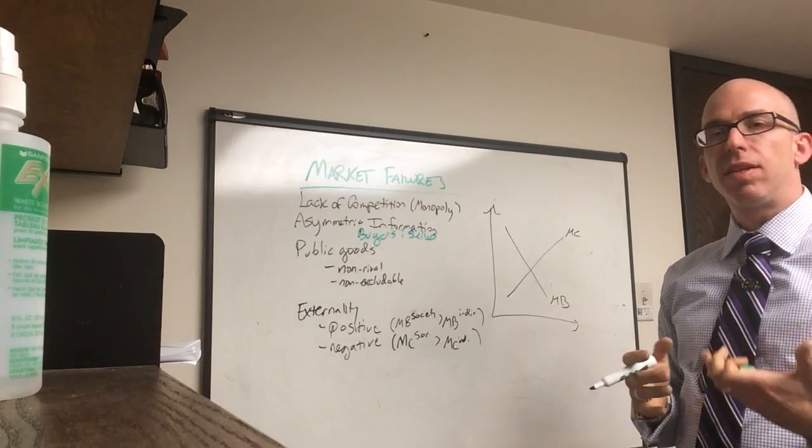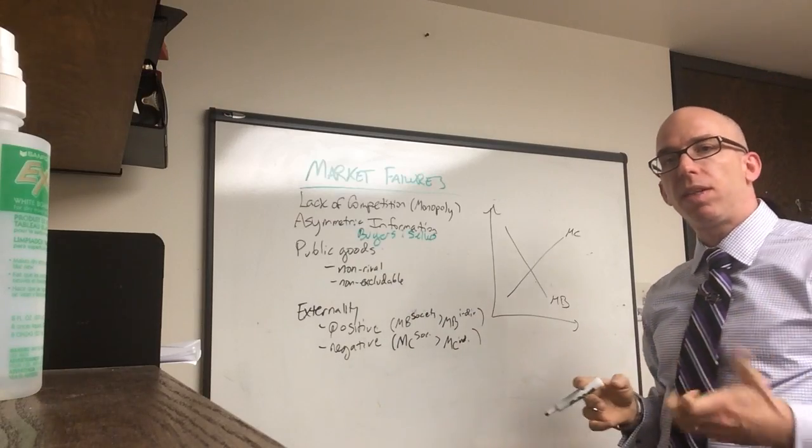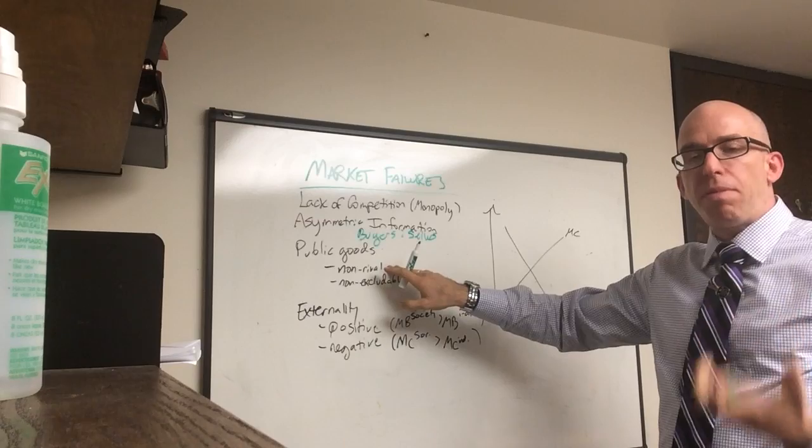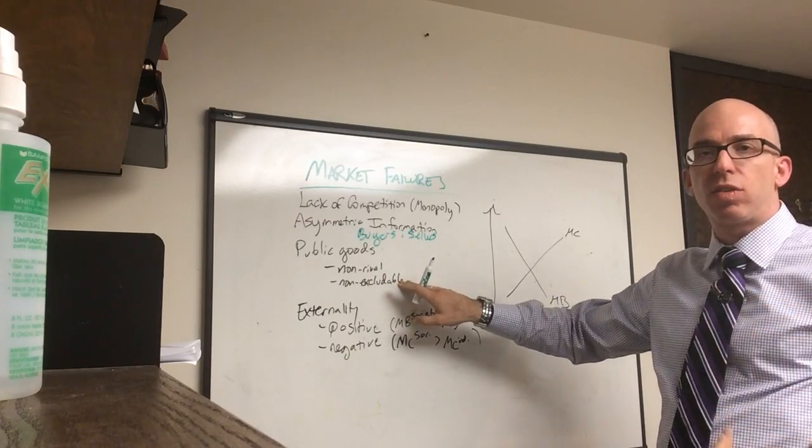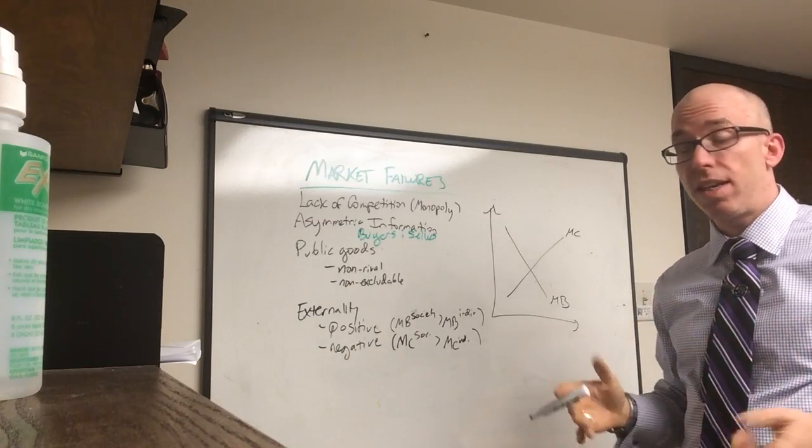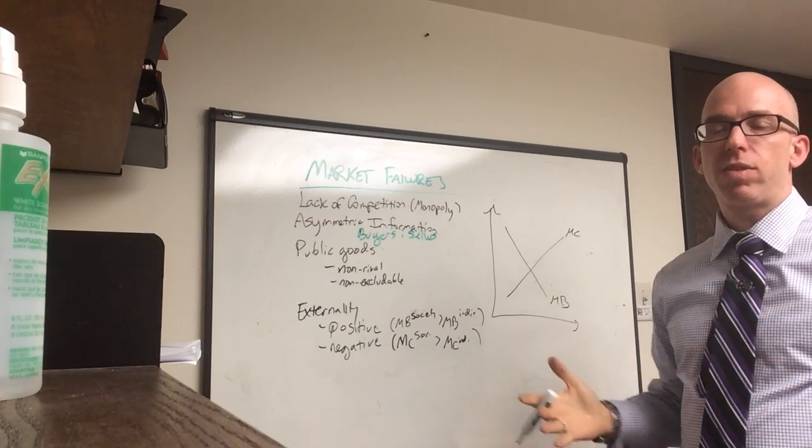Thirdly is public goods. Now public goods, there's terms for this, is non-rival and non-excludable. Public goods are basically goods that cannot be kept from others for non-payment, and that means it's not excludable. If people don't pay for the good they're still allowed to use it. Non-rival means that the consumption of the good does not take it away from someone else.